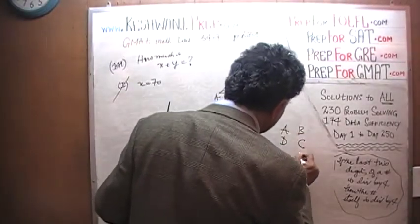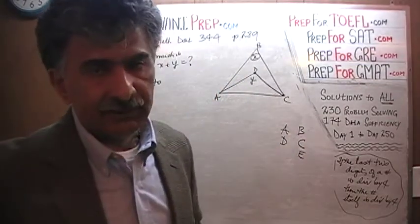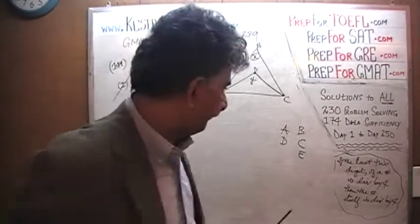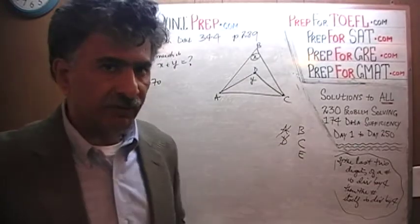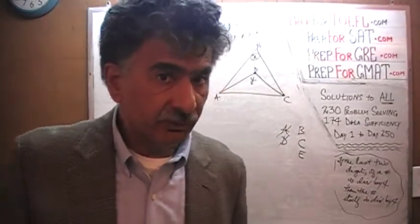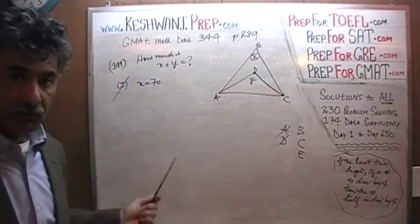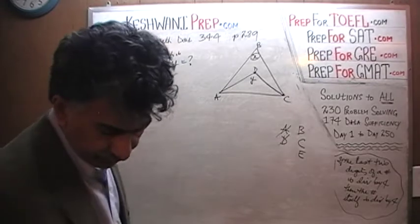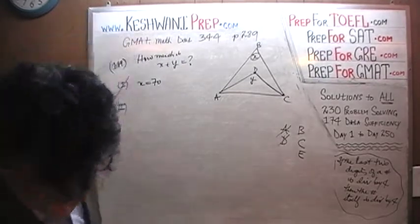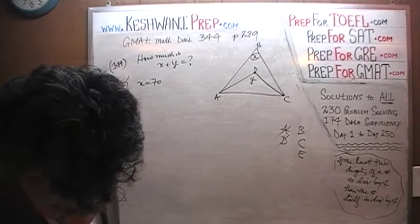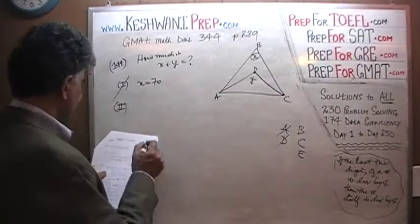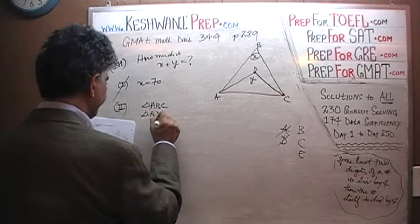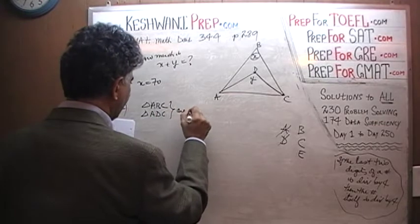A, D, B, C, E. Now that we've established the first statement by itself is not enough, the answer cannot be A or D. It's not worthless information — it might come in handy depending on what is given in the second statement. In the second statement, they tell us that triangles ABC and ADC are both isosceles triangles.